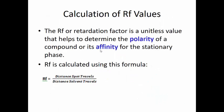Now let's talk about the calculation of the RF values, which you're going to have to do. The RF, or retardation factor, is a unitless value — as long as the two numbers have the same units, whether centimeters or inches. It helps us determine the polarity of compounds or the affinity of a compound for the stationary phase, and it's calculated using the formula we've discussed.